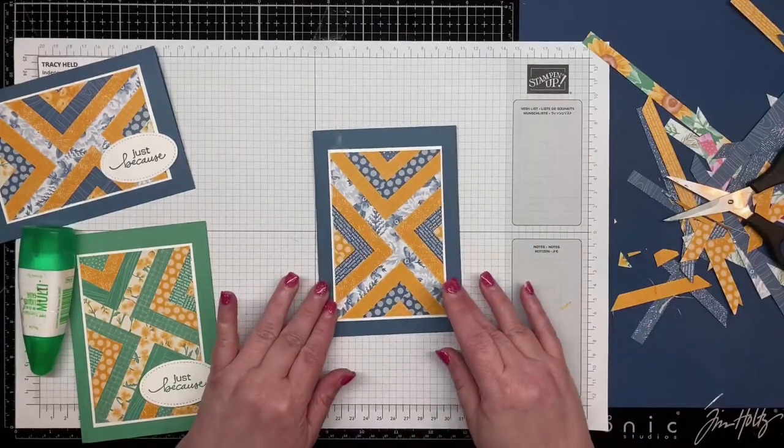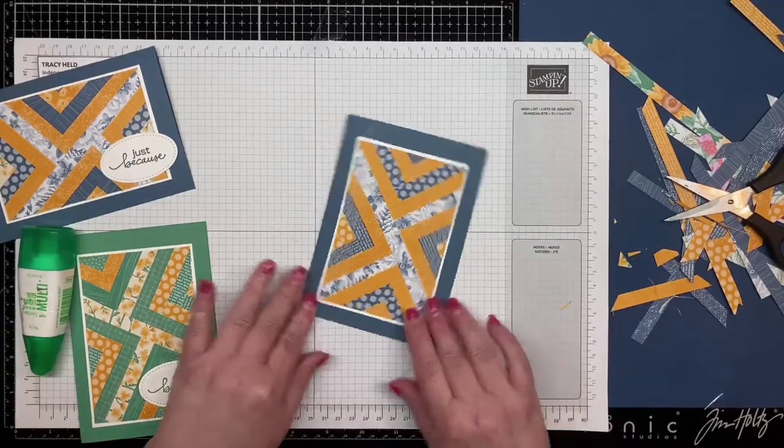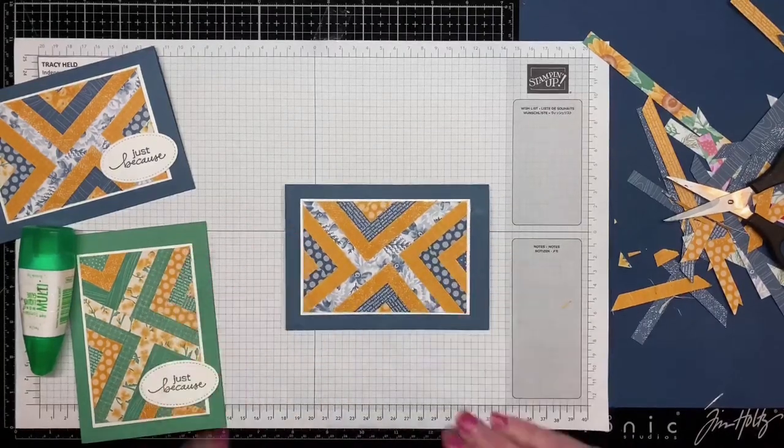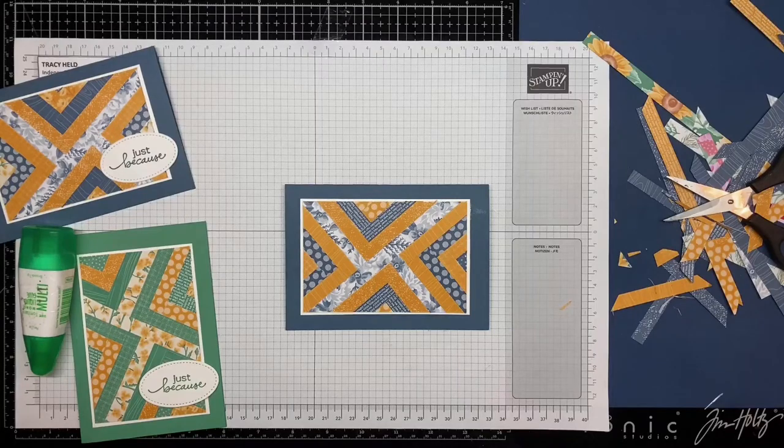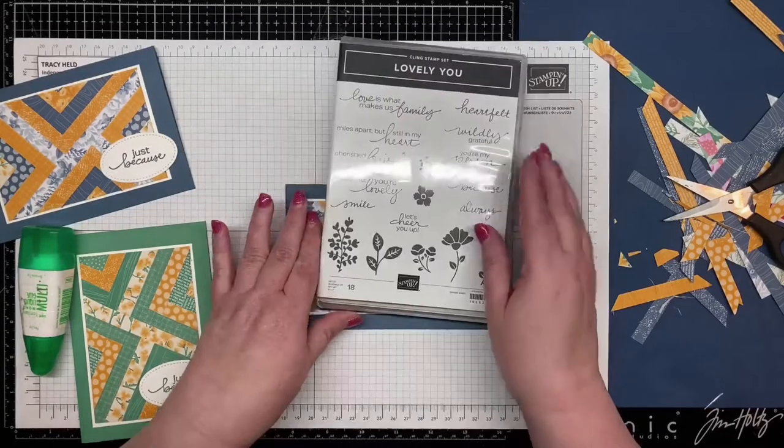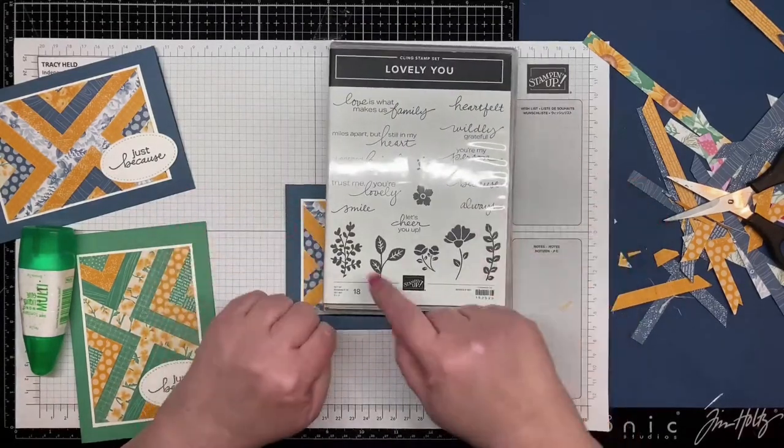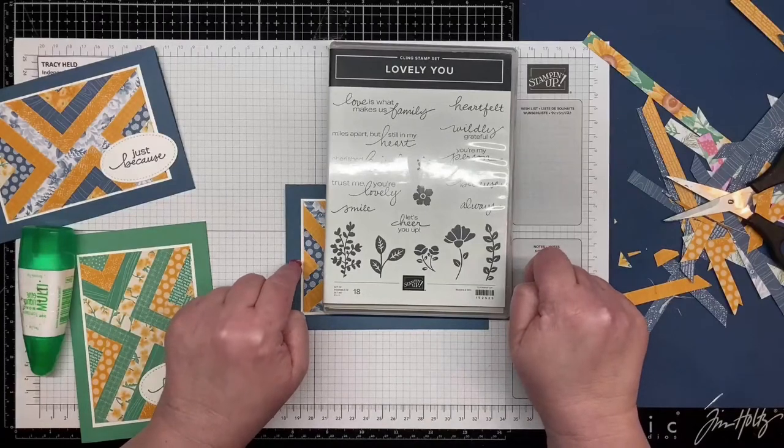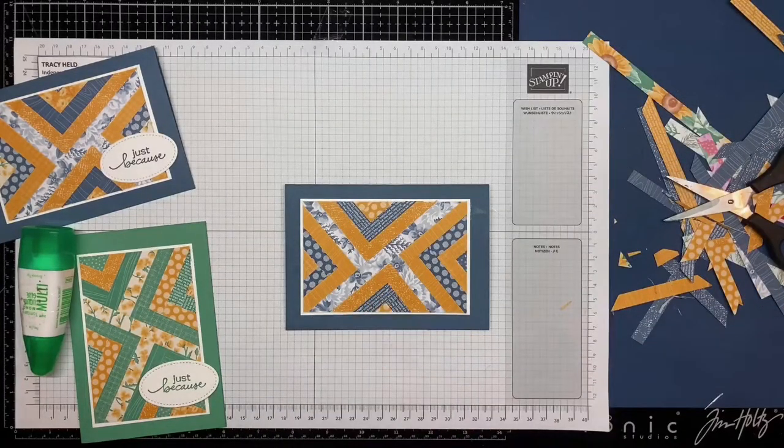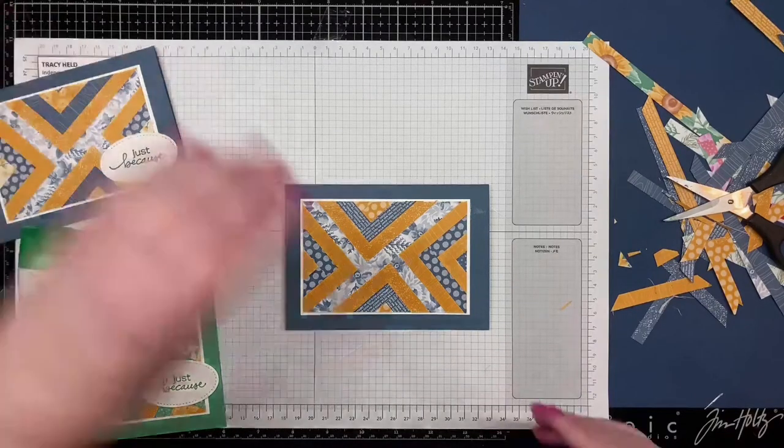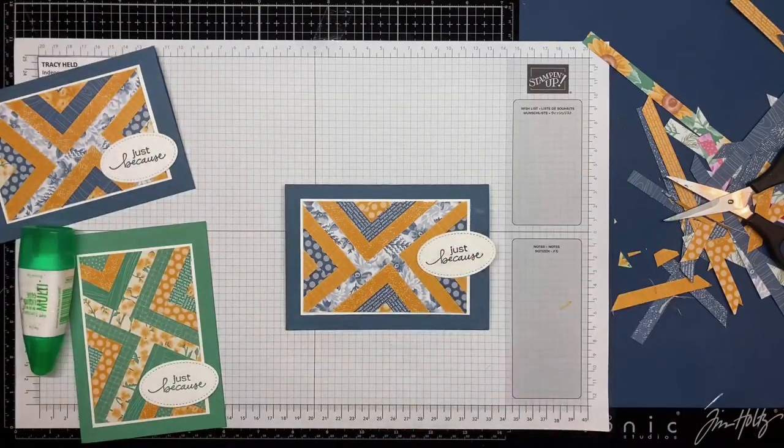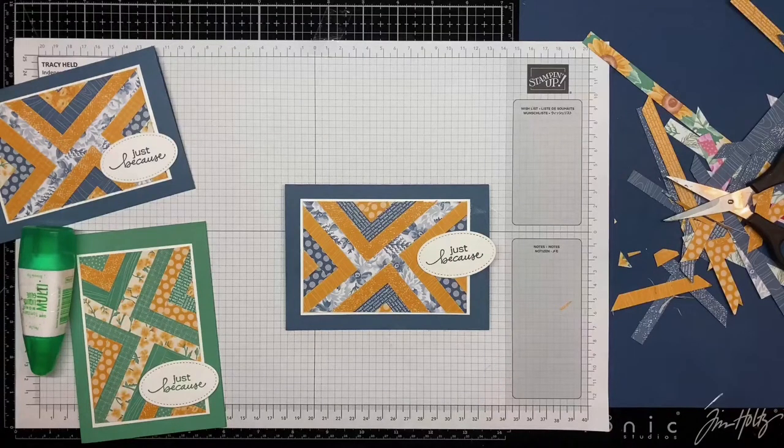And then you can decide whether you want it to be landscape or portrait. I've used the Lovely You stamp set. It's got some really sweet greetings in it. I wanted a little greeting because I didn't want to cover up too much of my design. So I've stamped that and cut it out with my stitched ovals dies.